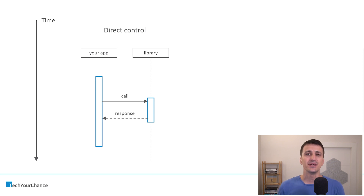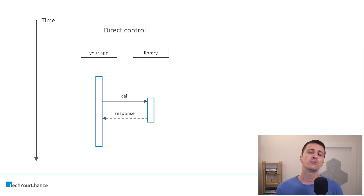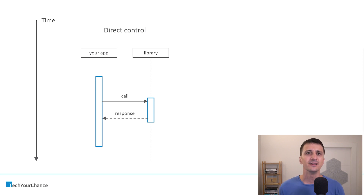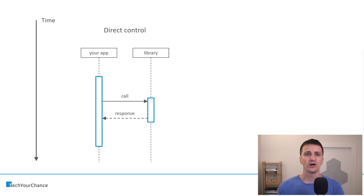This response might be in the form of a return value, or it might be in the form of a callback — it doesn't really matter. The library performed its function and then it returns. Pretty much the flow is complete, and the library becomes idle after it completes this flow. That's direct control: our application sends some requests to the library.